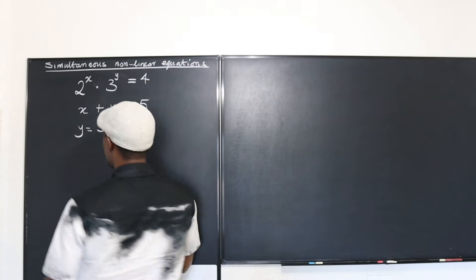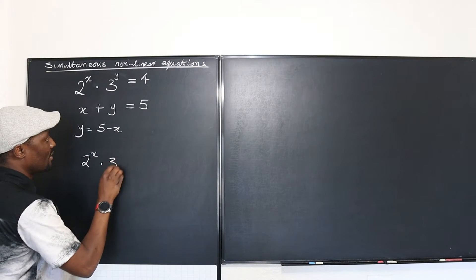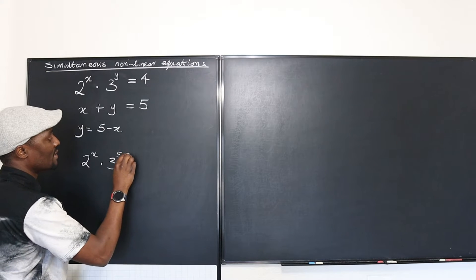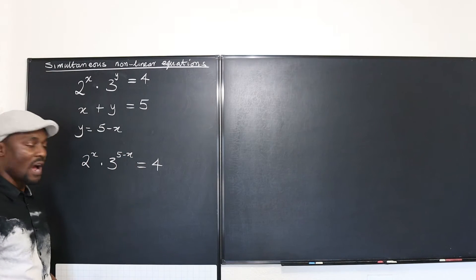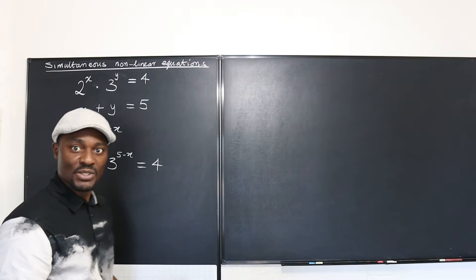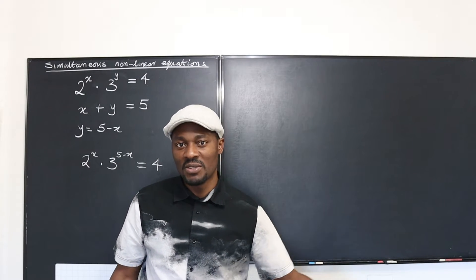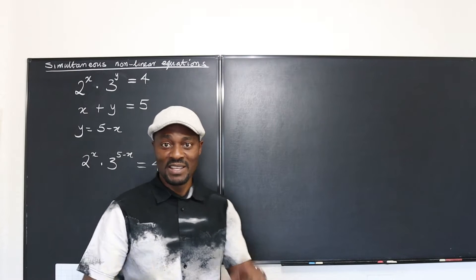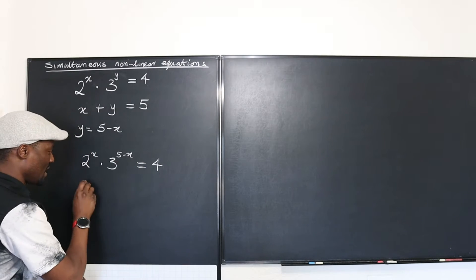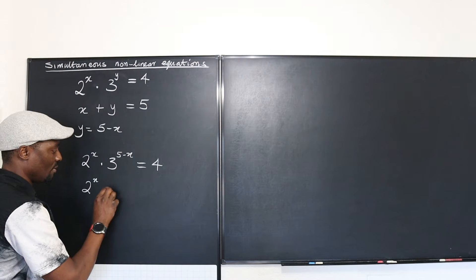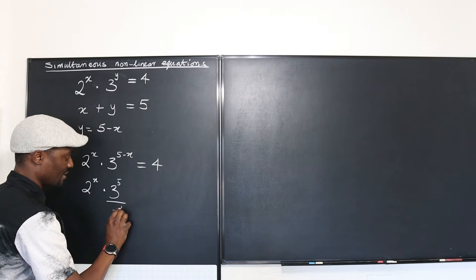I can rewrite the first equation and say 2 to the x multiplied by 3 to the (5 minus x) is equal to 4. Now how do we solve this? We might just need to employ some logarithms to be able to bring down the exponents.